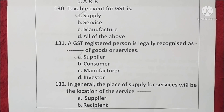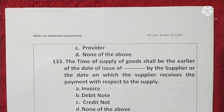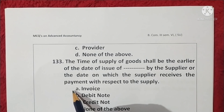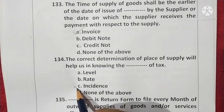Question 132. In general, the place of supply for services will be the location of the service recipient. Option B is correct. Question 133. The time of supply of goods shall be the earlier of the date of issue of an invoice by the supplier or the date on which the supplier receives payment. Option A is correct. Question 134. The correct determination of place of supply will help in knowing the incidence of tax. Option C is correct.